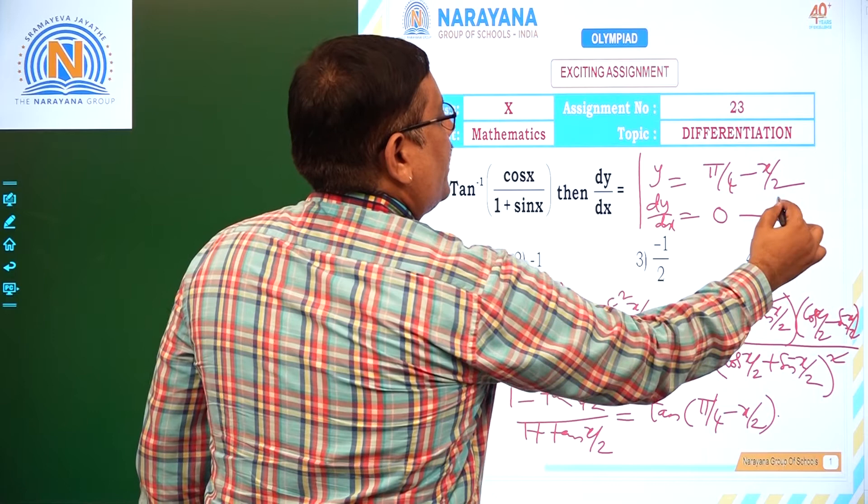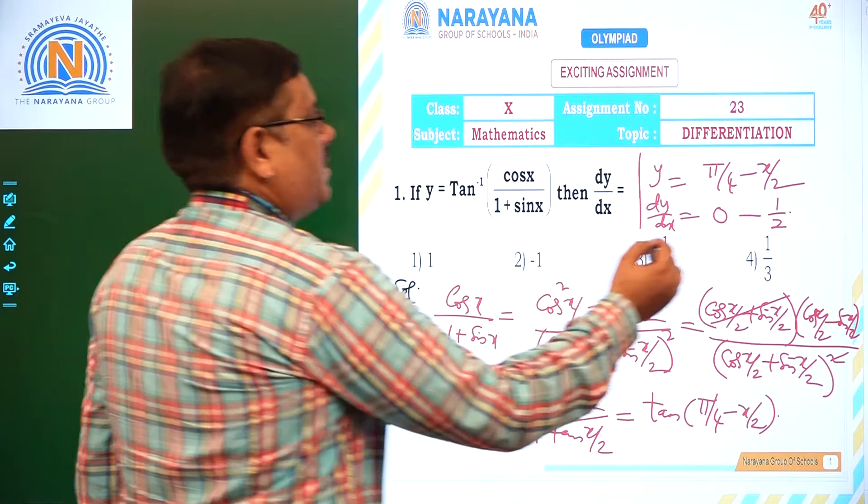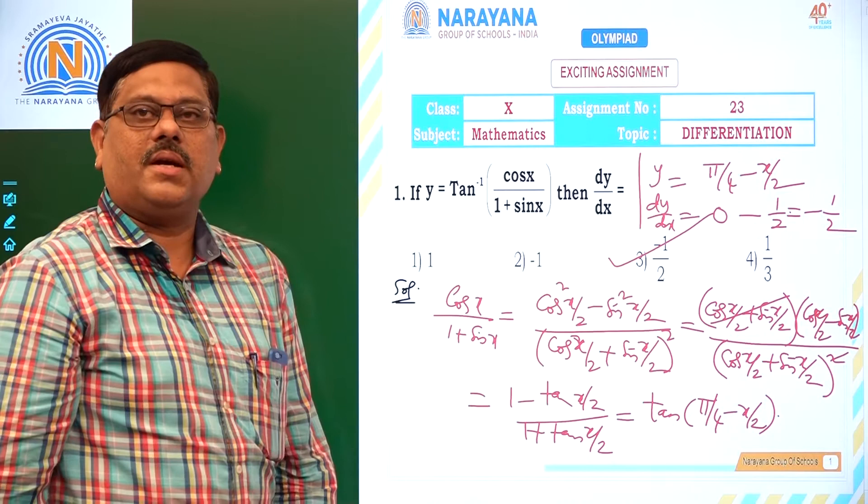dy/dx of x/2 is 1/2. So the answer for this question is minus 1/2, which is the third option. First we simplified the expression, then we applied the derivative on both sides.